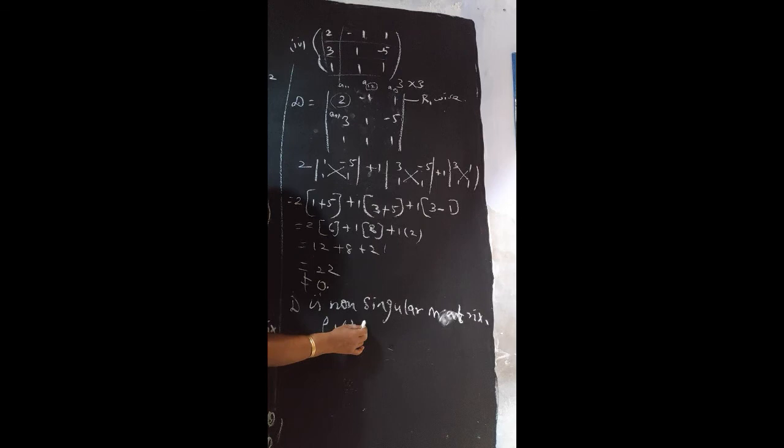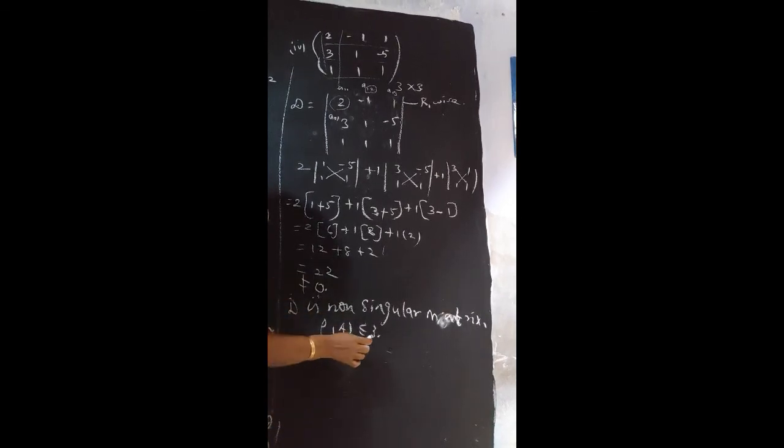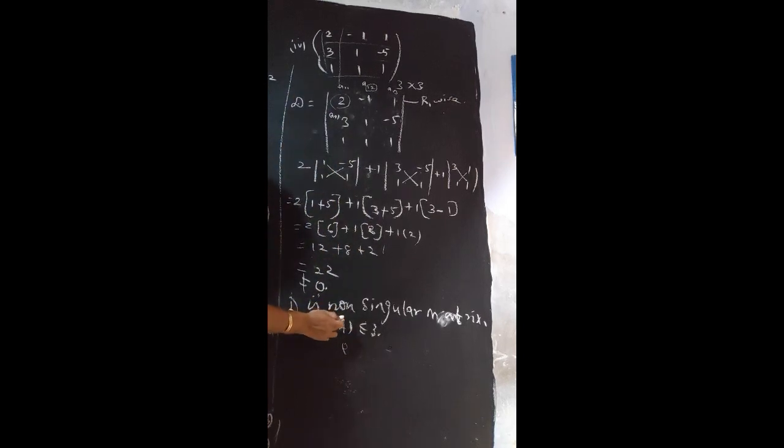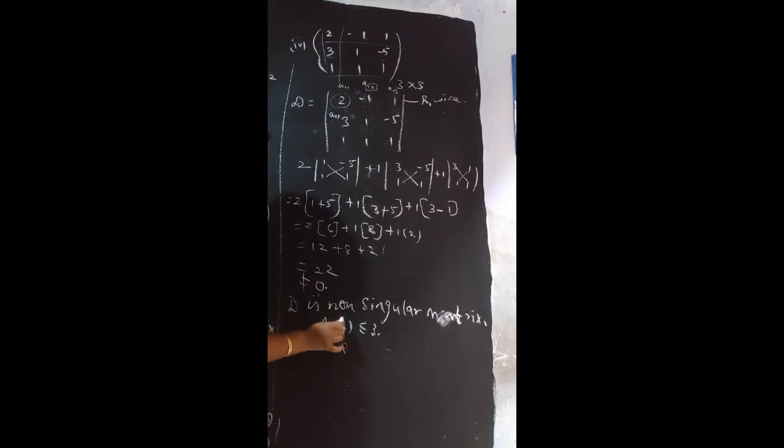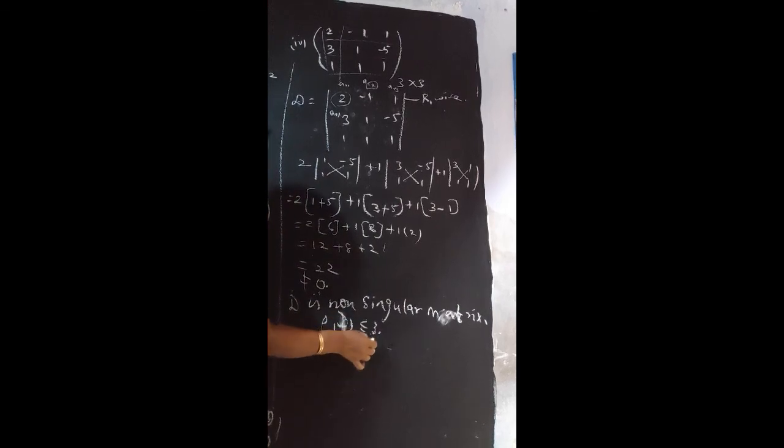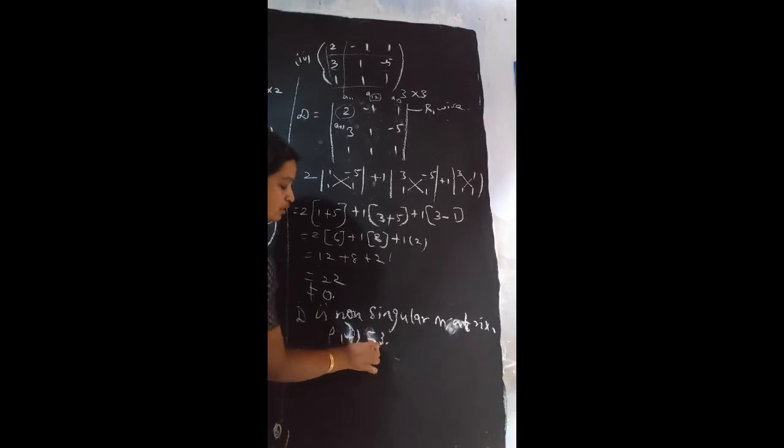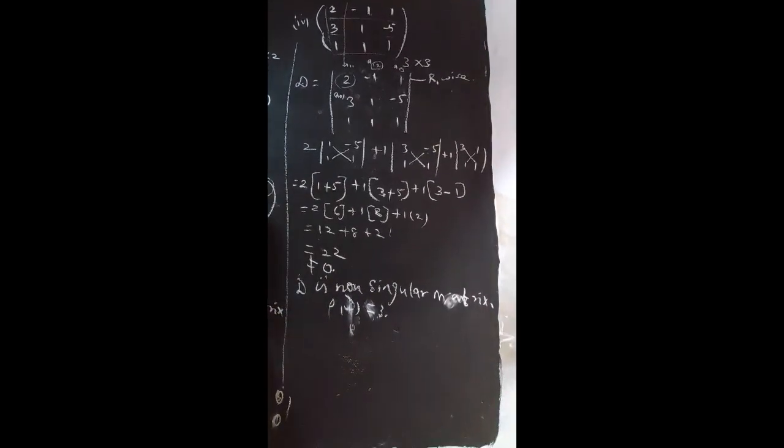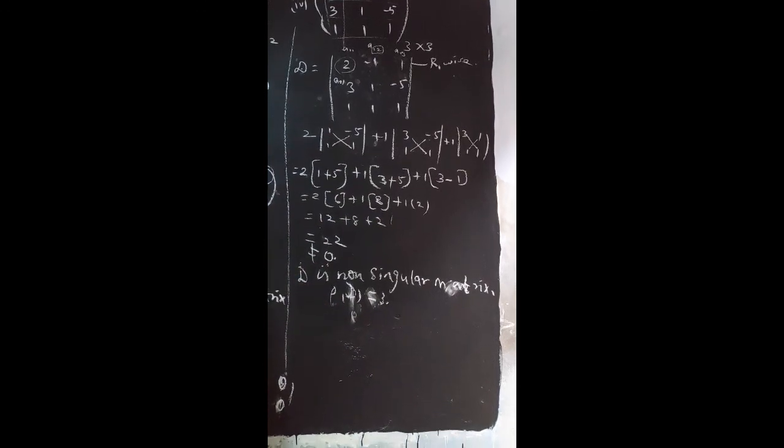Non-singular means the order is row of A less than or equal to 3. Here, non-singular means row of D equal to 3. Row of D equal to 3. Rank of this matrix is 3. Rank of this matrix is 3.